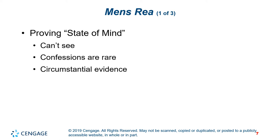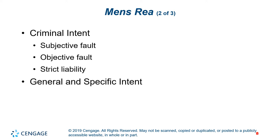One of the biggest challenges of mens rea is proving state of mind — you can't see a state of mind. Confessions are the only direct evidence of mental attitude. Defendants rarely confess their true intentions, so proof of their state of mind usually depends on indirect or circumstantial evidence. Acts and attendant circumstances are the overwhelming kind of circumstantial evidence. There are two kinds of fault: subjective fault, which requires a bad mind in the actor; objective fault, which requires no purposeful or conscious bad mind in the actor; and strict liability, which is liability without either subjective or objective fault.